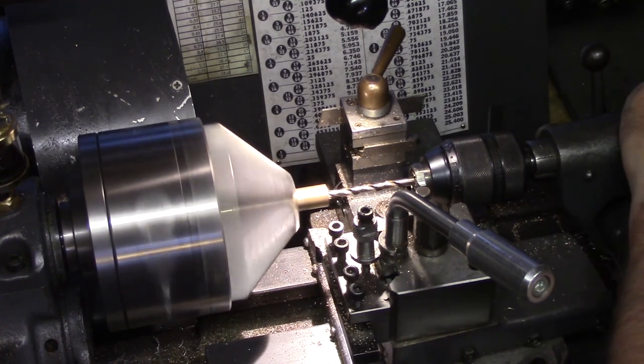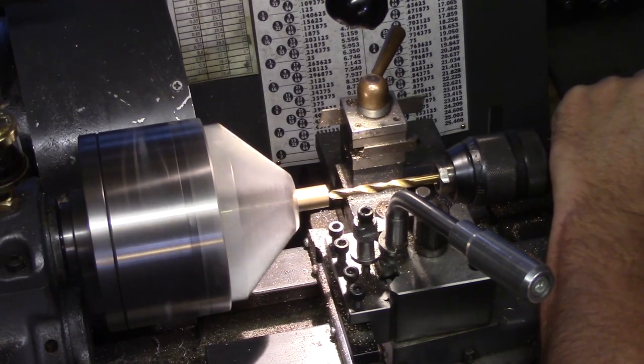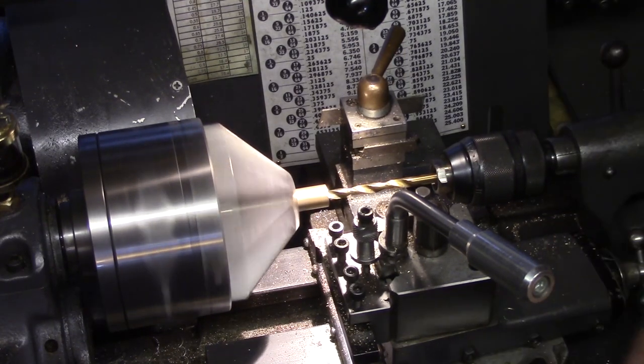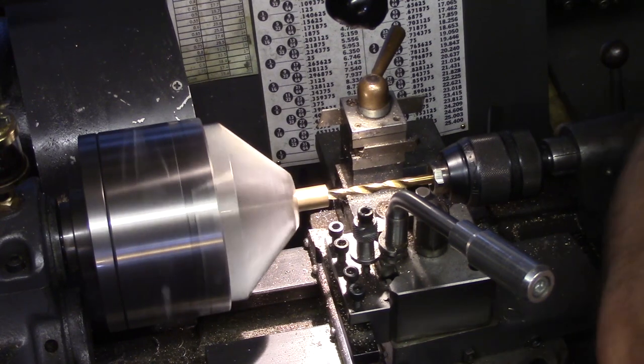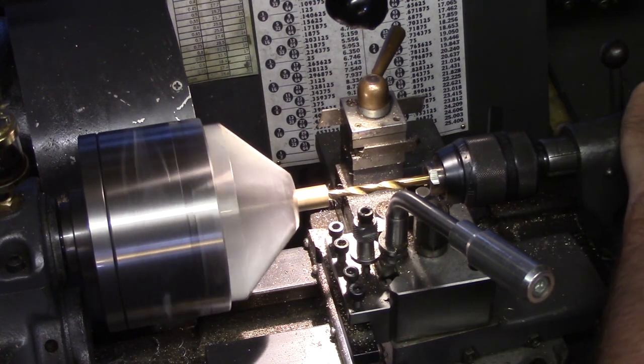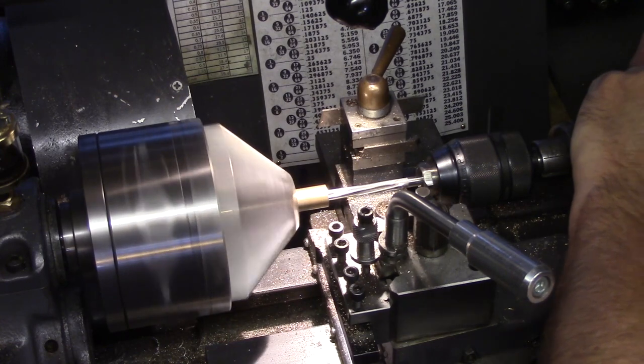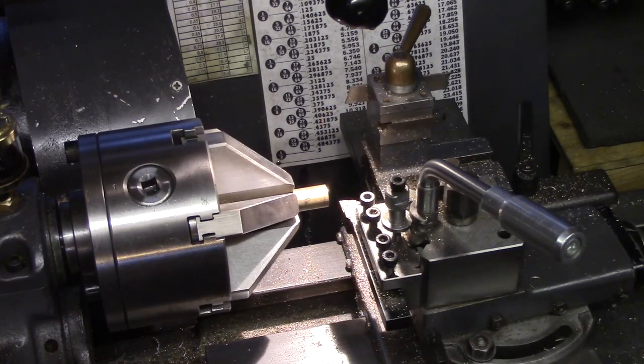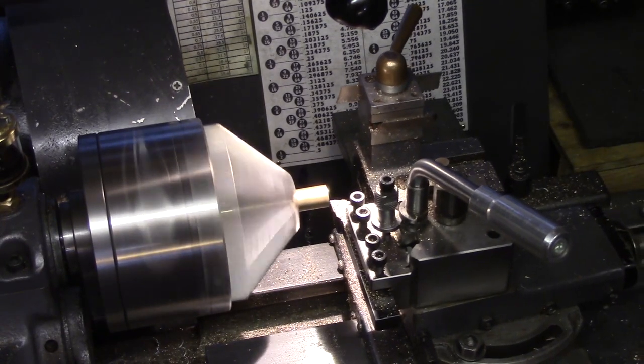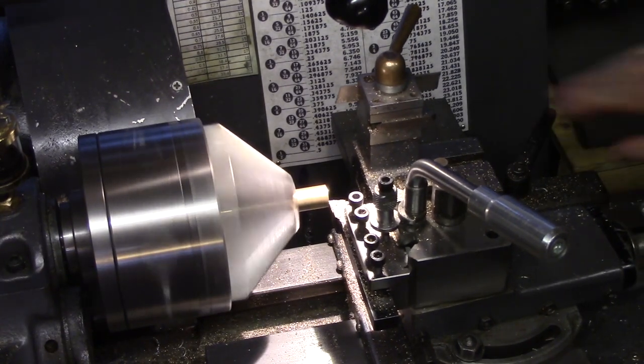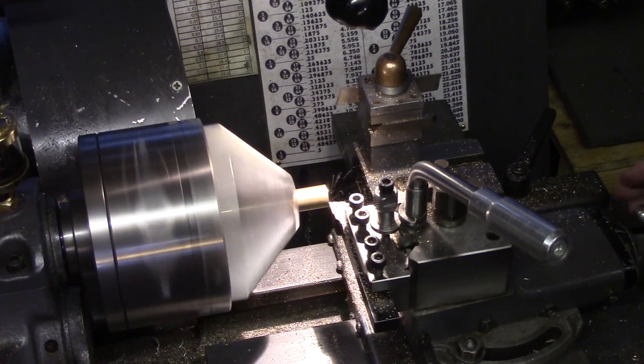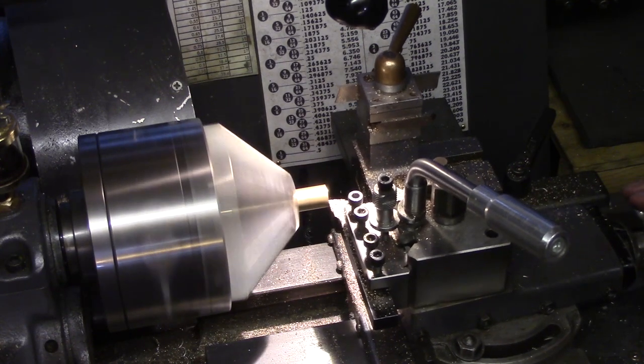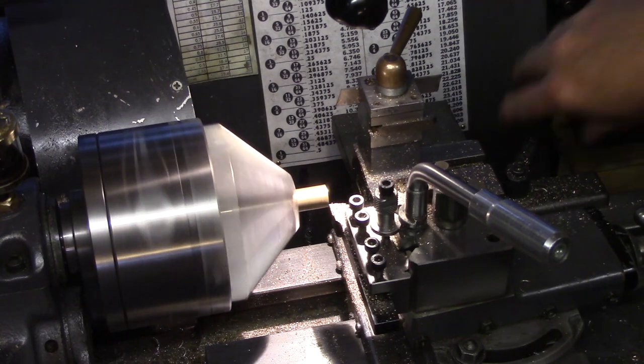Another length of phosphor bronze was then chucked to make the bearing for the small end. This didn't need to be split as it will be attached via a pin to the crosshead, so it was simply drilled out progressively and then reamed to size. It was then faced and turned again to be a press fit into the bore on the conrod, finally being parted off to the desired length.